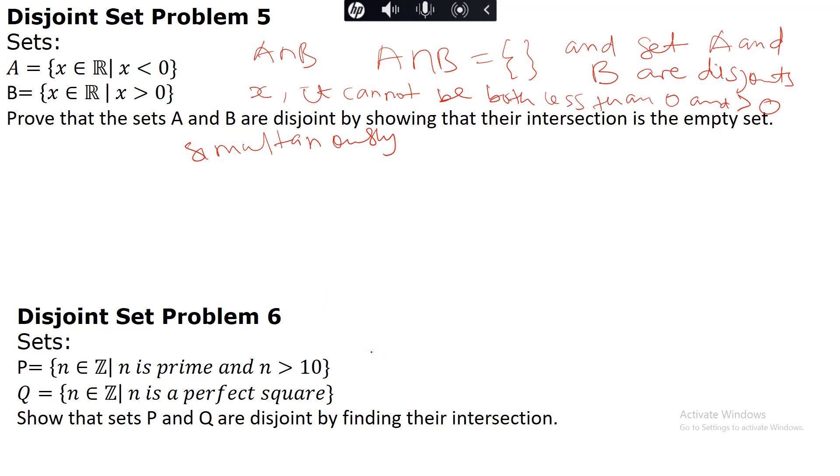So in problem six we have to show that set P and Q are disjoint by finding their intersection. Now the intersection of P and Q consists of elements that are both common to both sets. Now when you look at primes greater than 10, primes greater than 10 cannot be a perfect square.